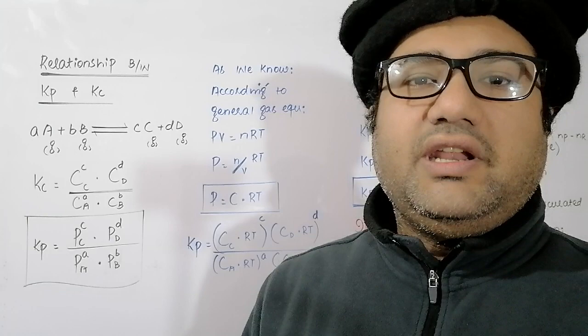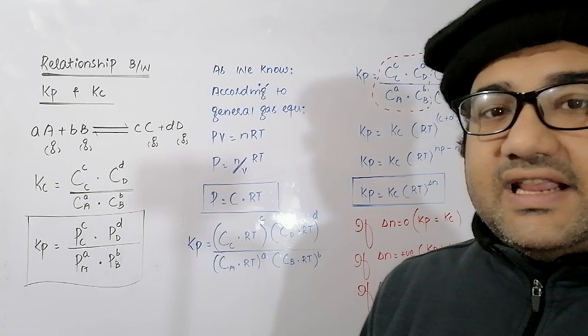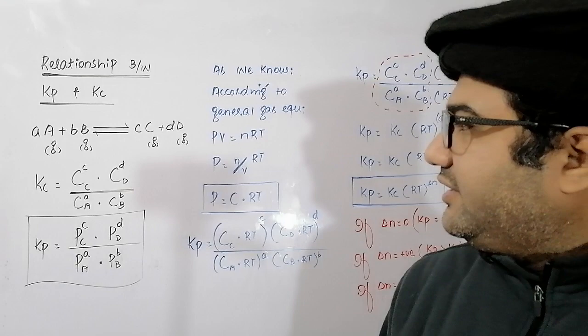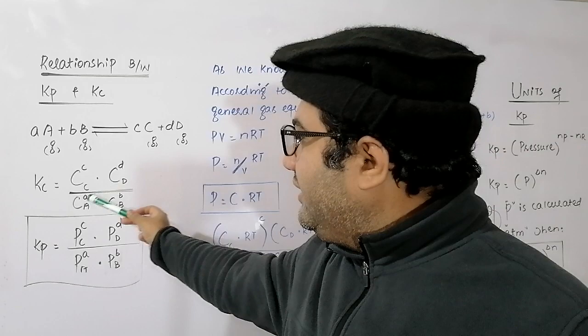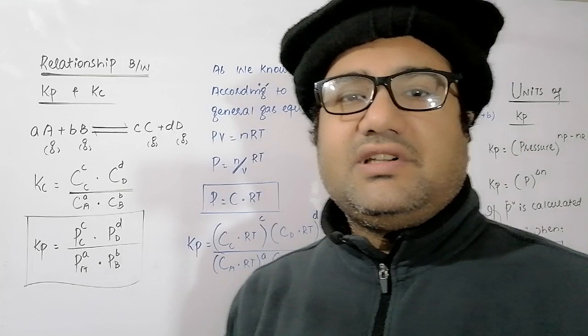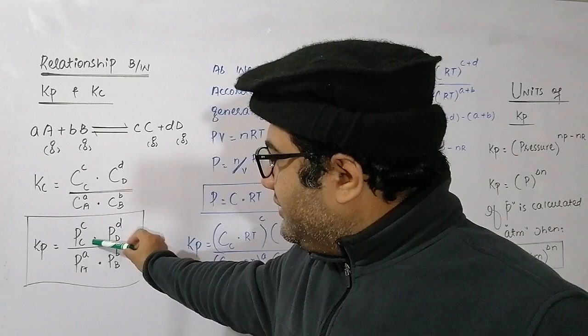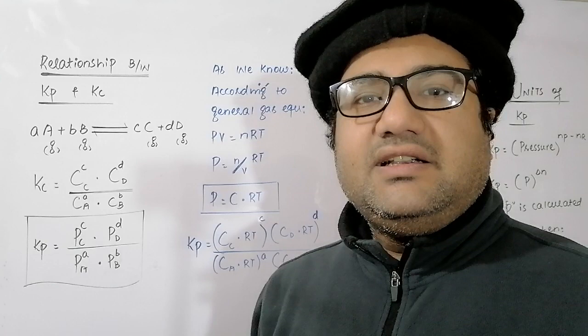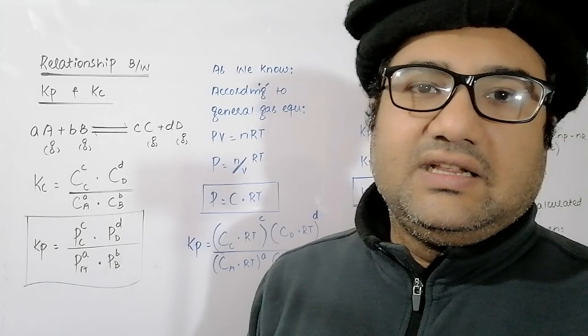Kc is the equilibrium constant in terms of concentration, which can be written as the concentration of C raised to power c, times concentration of D raised to power d, divided by concentration of A raised to power a and concentration of B raised to power b. Similarly, Kp is the equilibrium constant in terms of partial pressure: partial pressure of C raised to power c times partial pressure of D raised to power d, divided by partial pressure of A raised to power a and partial pressure of B raised to power b.